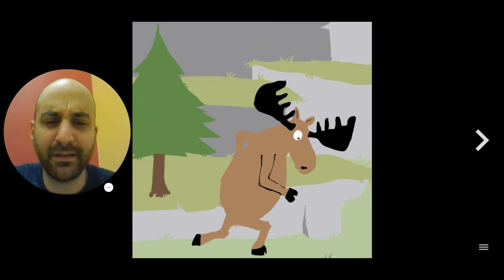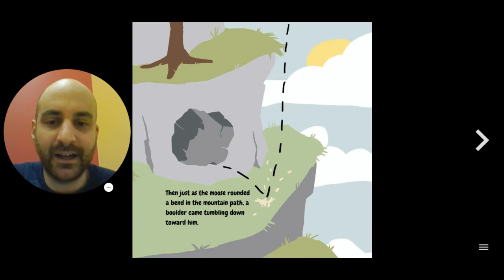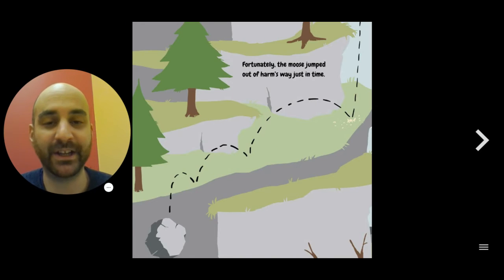And does moose see something here? Then just as the moose rounded a bend in the mountain path, a boulder came tumbling down toward him. Fortunately, the moose jumped out of harm's way just in time. It looks like a close call. Like that boulder really could have hurt him if he didn't move out of the way quickly enough.